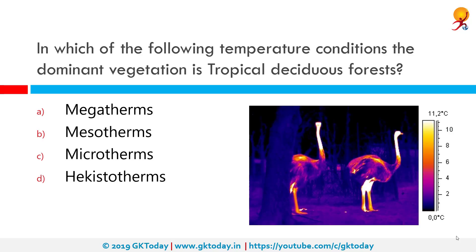Under which temperature conditions is the dominant vegetation tropical deciduous forests? The correct answer is in mesotherms. A mesotherm is a type of animal with a thermoregulatory strategy intermediate to cold-blooded ectotherms and warm-blooded endotherms. So cold-blooded animals are ectotherms, warm-blooded are endotherms, and the one in between is known as mesotherms.